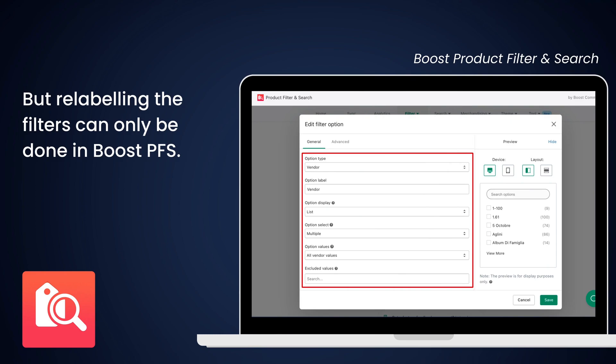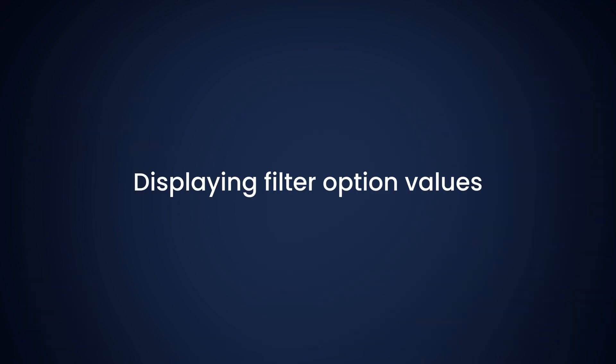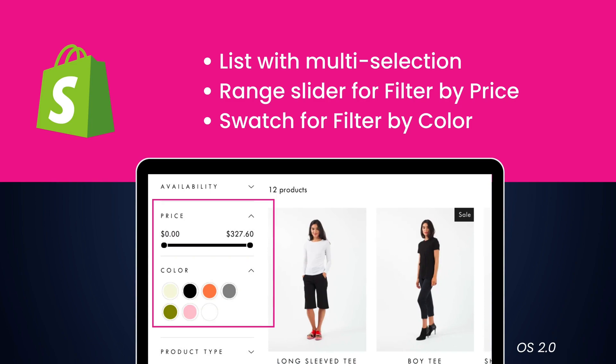These changes can be done effortlessly in our app. By default, most OS 2.0 themes show the price filter as a range slider, color filter in a swatch, and the rest using a list. However, if you have product options like length, height, and width, you will want to display them in a range slider rather than a list because there will be too many values. Unfortunately, you can't change how the filters are displayed on OS 2.0 themes unless you dig into the code editor.